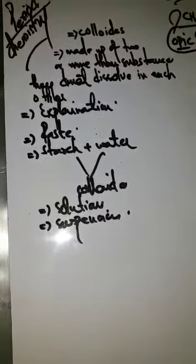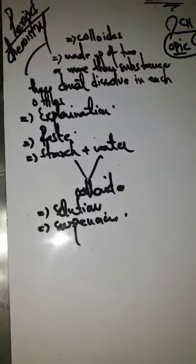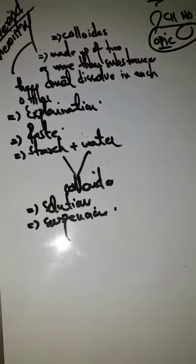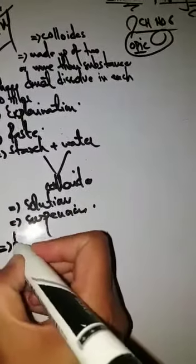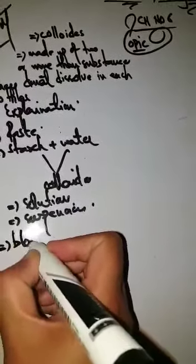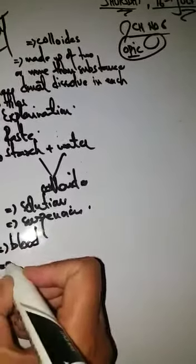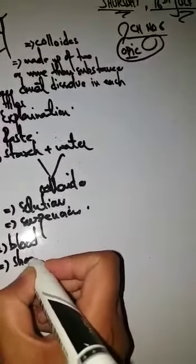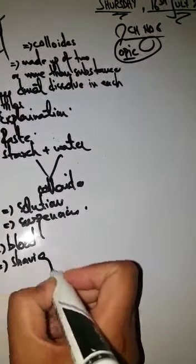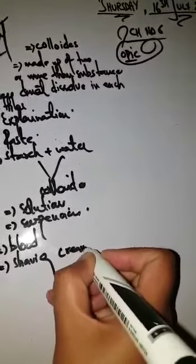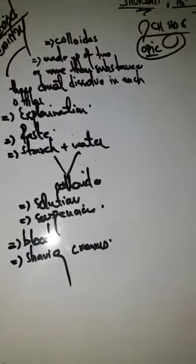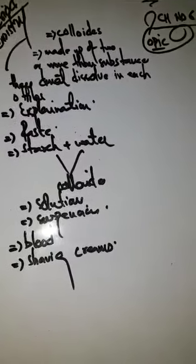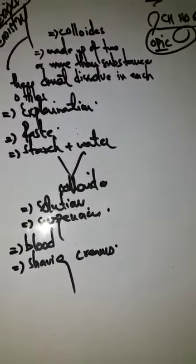Another best example of a colloid is blood. Our blood is the best example of a colloid. Apart from this, shaving creams are also examples of colloids. So it means that colloids like these are all around us.